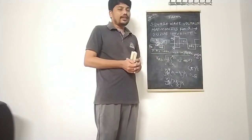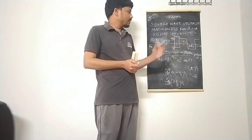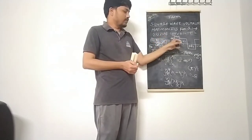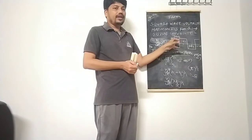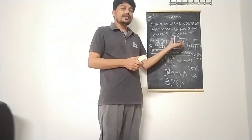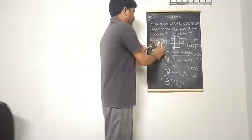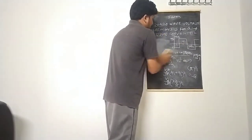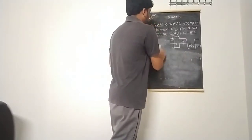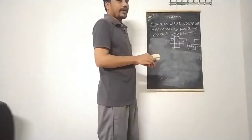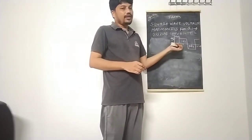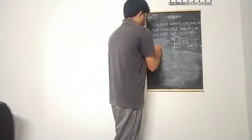Now we find the nth harmonic of this voltage. To analyze the harmonics, we apply the Fourier series to this square-wave waveform. By applying the Fourier series, we can find both the fundamental and nth harmonic voltages.